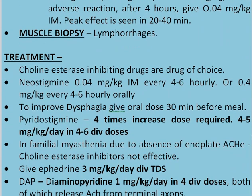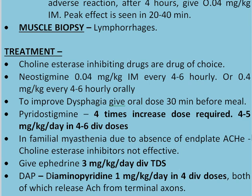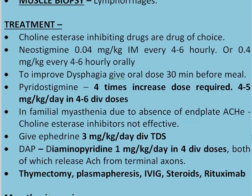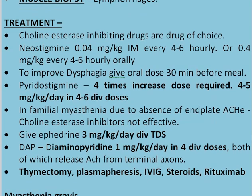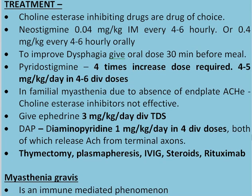Treatment: cholinesterase-inhibiting drugs are the drug of choice. Give neostigmine 0.04 mg/kg IM every 4–6 hours, or orally. To improve dysphagia, give the oral dose 30 minutes before meals. Pyridostigmine requires a 4-times-increased dose: 4–5 mg/kg/day in 4–6 divided doses. In familial myasthenia due to absence of end-plate acetylcholinesterase, cholinesterase inhibitors are not effective. Give ephedrine 3 mg/kg/day, and diaminopyridine 1 mg/kg/day in 4 divided doses — both of which release acetylcholine from the terminal axons.